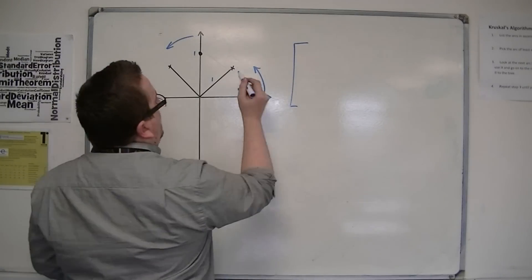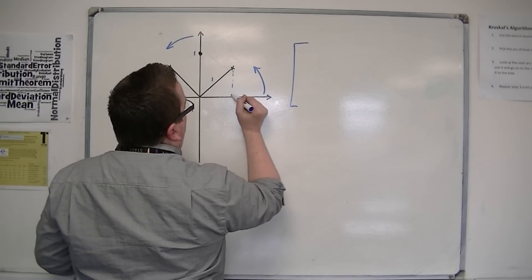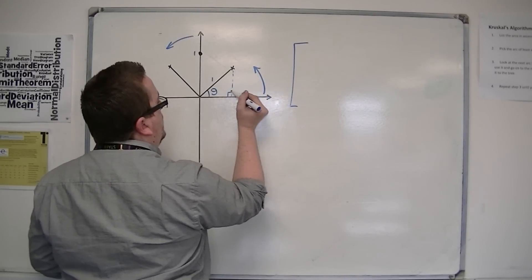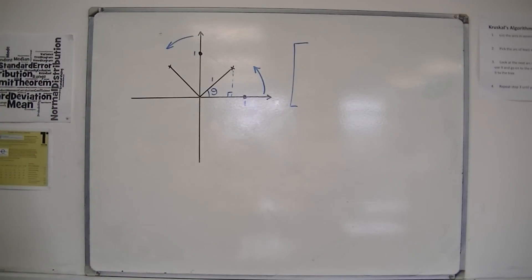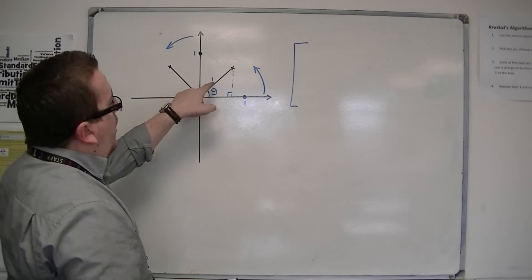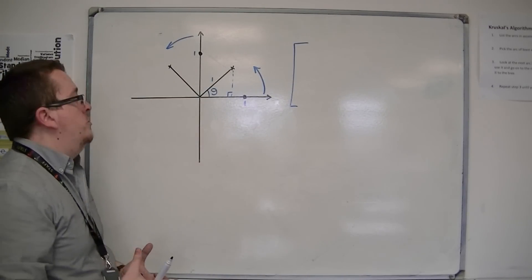then if I look at this using the angle theta and I construct a right angle triangle, then with 1 being the hypotenuse of that triangle